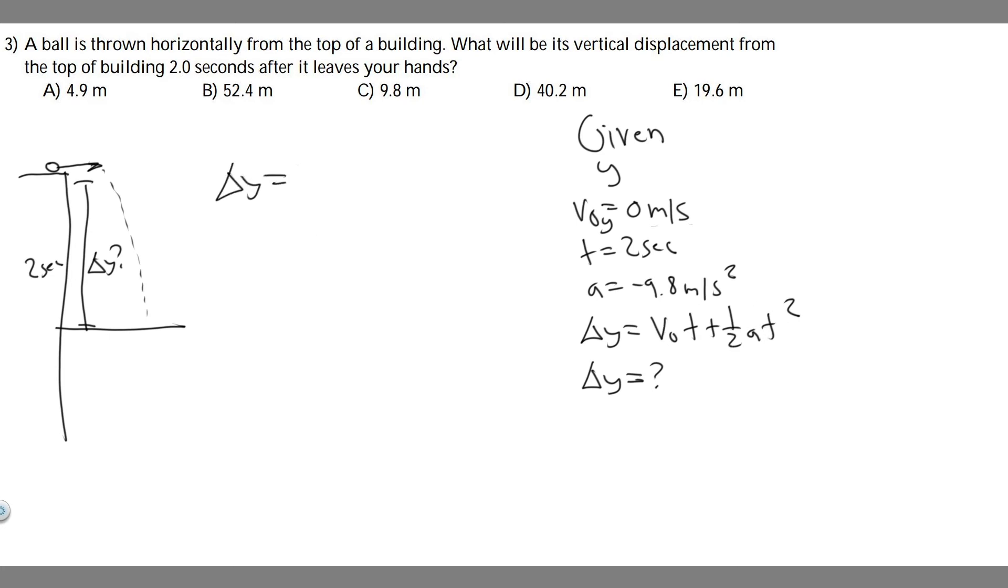So just go ahead and plug it in. Notice that this is 0, so times t is just going to be 0. So it's really just 1 half times a, which is minus 9.8, and then times 2 squared.